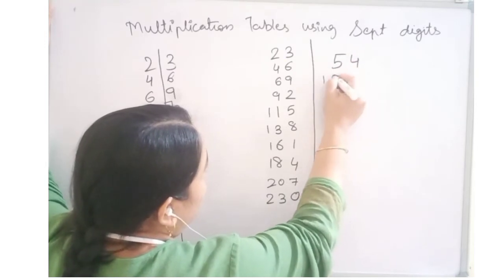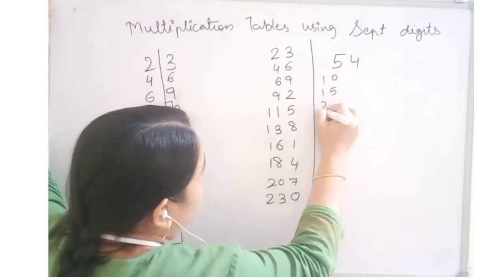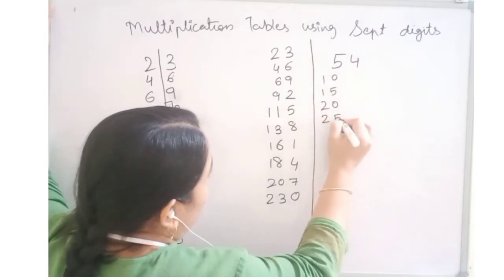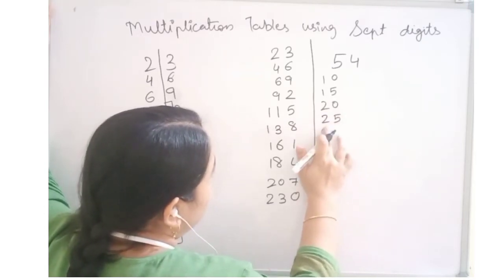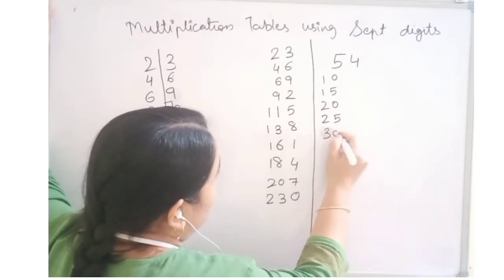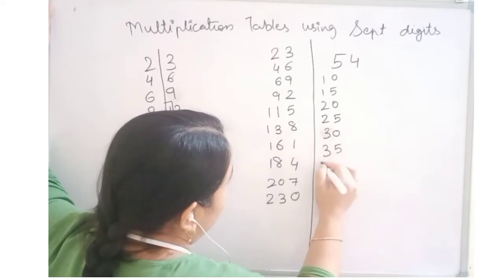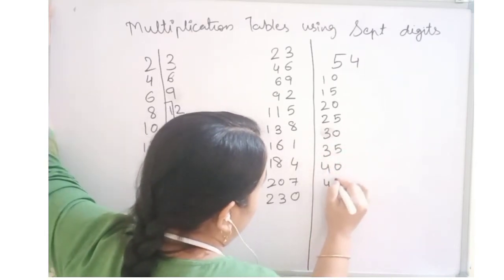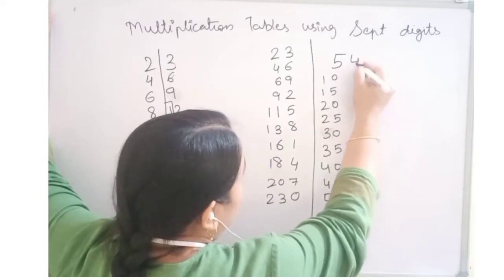So 5, 10, 15, 20, 25, 30, 35, 40, 45 and 50.